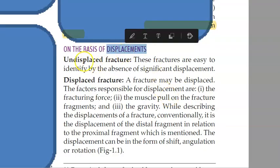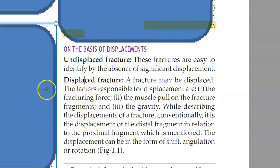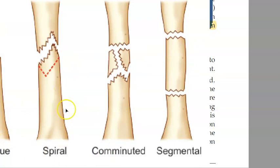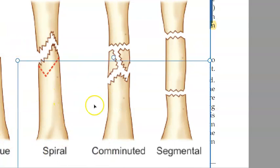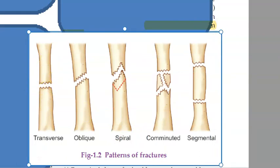Based on displacement, you can have an undisplaced fracture or a displaced fracture. An undisplaced fracture — look at this one — they are still in alignment. Let us draw the fracture like this: this is undisplaced.